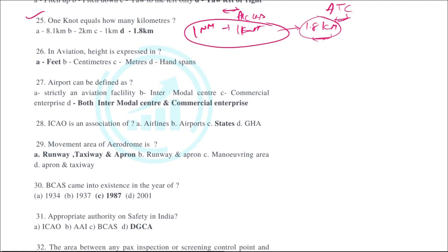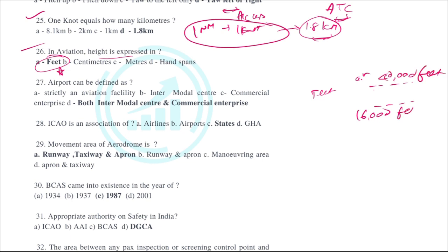In aviation, height is always expressed in feet. This is important — aircraft flying in the air normally fly between 16,000 to 40,000 feet in India. These heights are always expressed in feet.